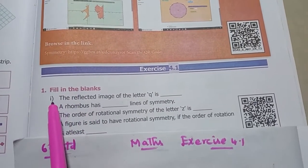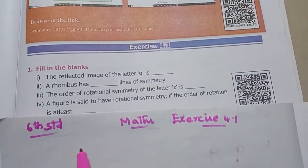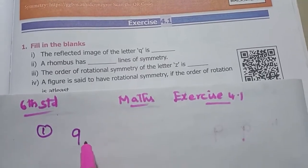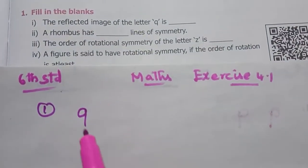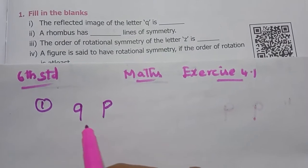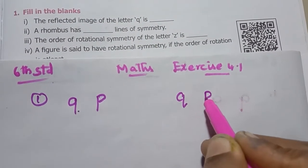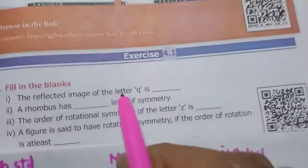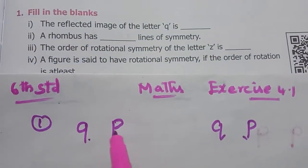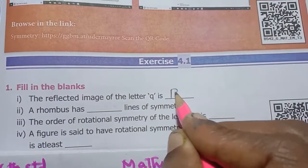Fill in the blanks. First one: the reflected image of the letter Q is... The letter Q looks like this. This is a reflected image — if you look in the mirror, the reflection of Q gives you the letter P. So the answer is P.